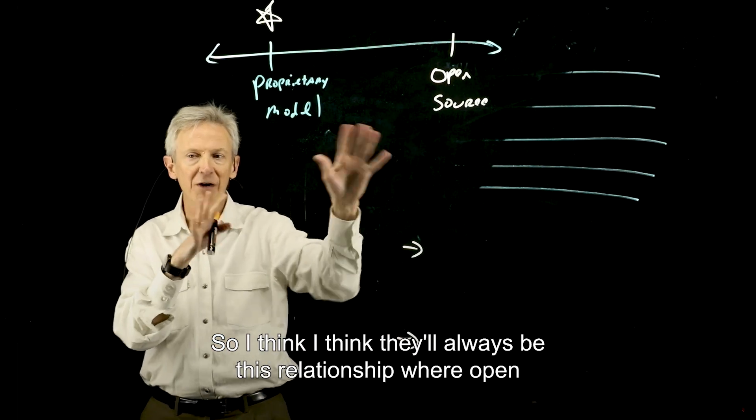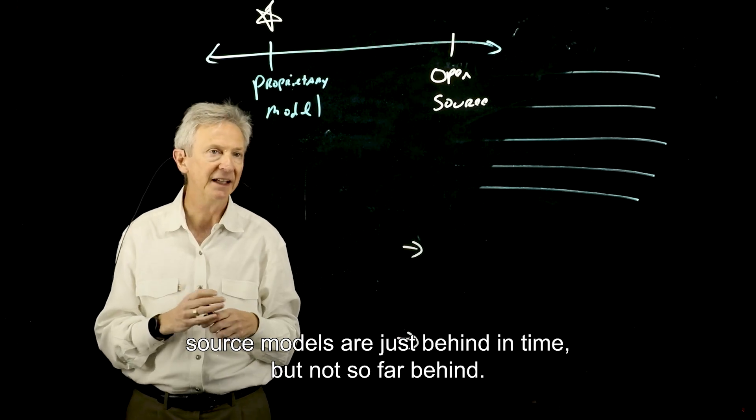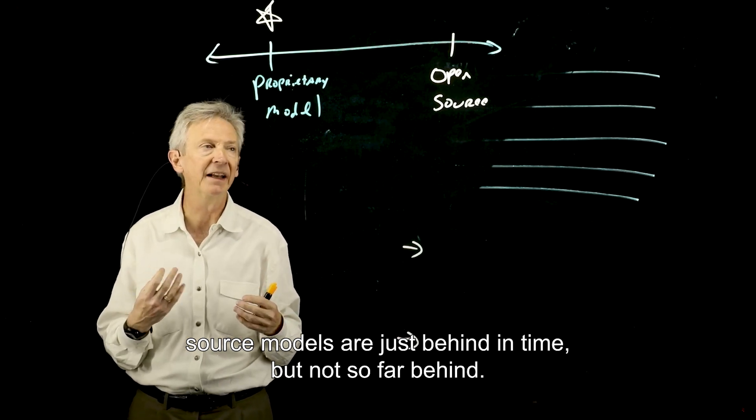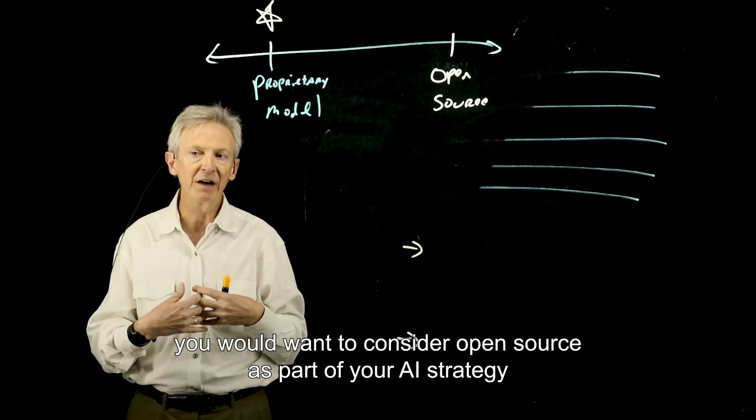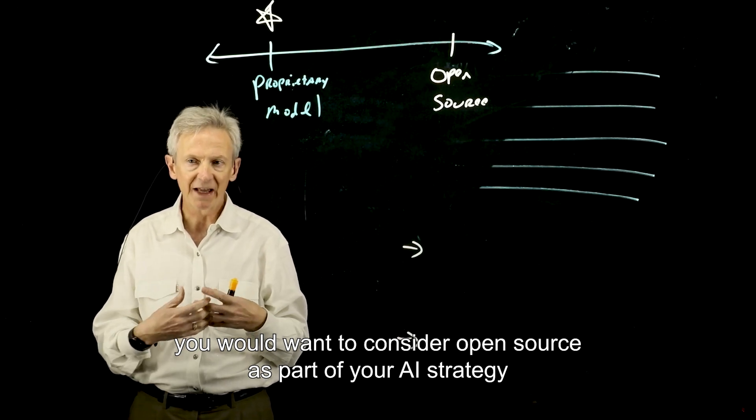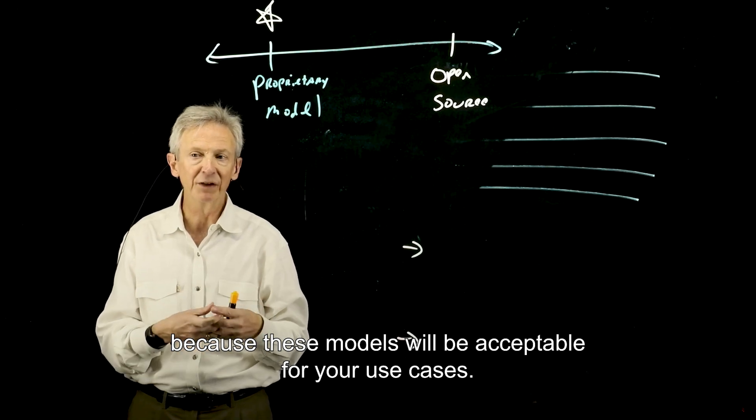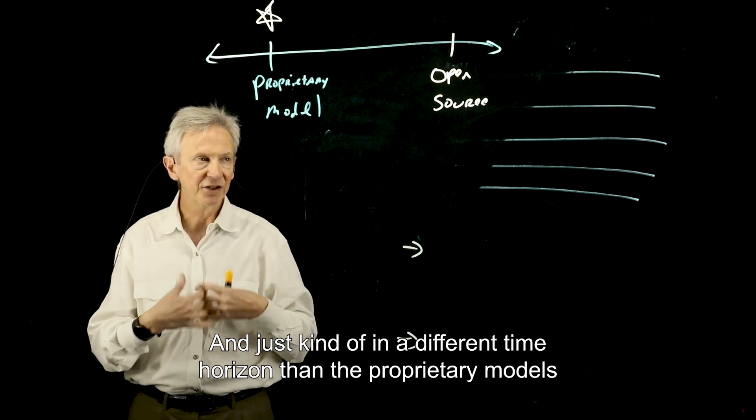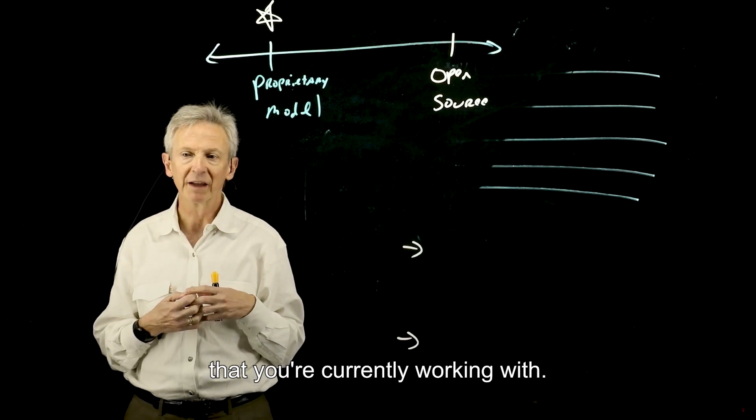So I think there'll always be this relationship where open source models are just behind in time. But not so far behind, I think that you would want to consider open source as part of your AI strategy because these models will be acceptable for your use cases and just kind of in a different time horizon than the proprietary models that you're currently working with.